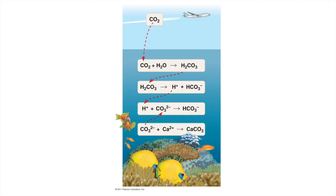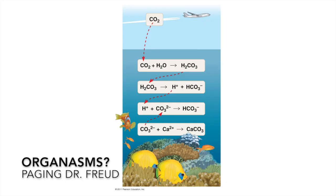This decrease in pH increases the solubility of calcium carbonate — the material which marine organisms such as clams, oysters, scallops, and perhaps most importantly, corals, use to build their exoskeletons. This pH decrease is also associated with a phenomenon known as coral bleaching, which threatens our planet's reefs and the myriad of organisms that depend upon them as a habitat.